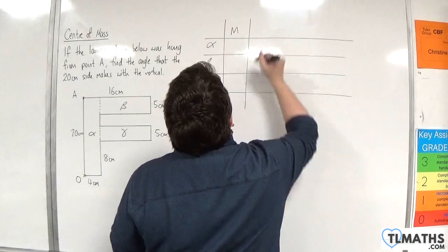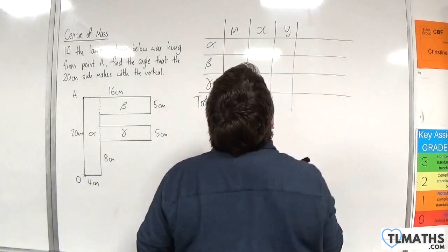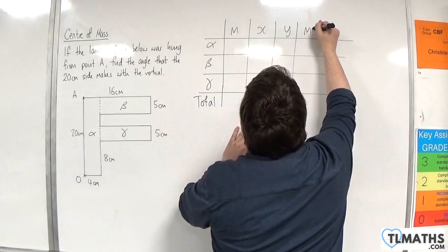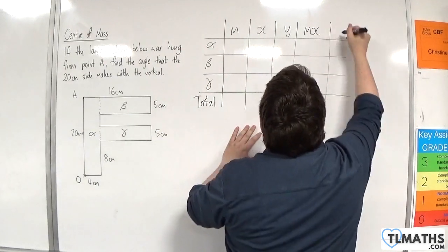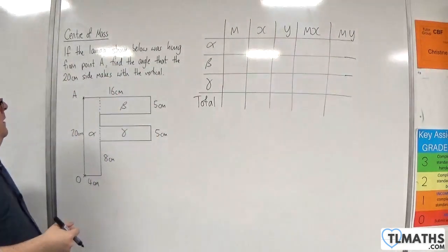So alpha, beta, gamma, and total. So mass, x, y, so center of mass of each of the rectangles, and then mass times x, mass times y.